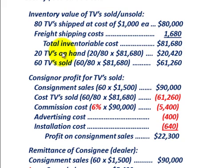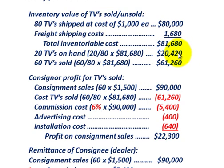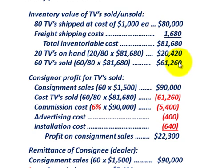At the end of the period when the remittance was made, there were 20 TVs still on hand. So 20 of the 80 times $81,680 gives us an inventory on hand of $20,420. And then for the 60 TVs that were sold, 60 of the 80 times $81,680 gives us an inventory value cost of $61,260.